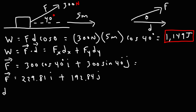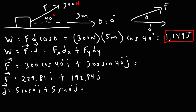Now let's do the same for the displacement vector. The displacement vector has a magnitude of 5 and, because it's parallel to the x-axis, it has an angle of 0 degrees. So it's 5 cosine 0 times i plus 5 sine 0 times j. Cosine 0 is 1, giving us 5i, and sine 0 is 0, so the displacement vector is simply 5i.